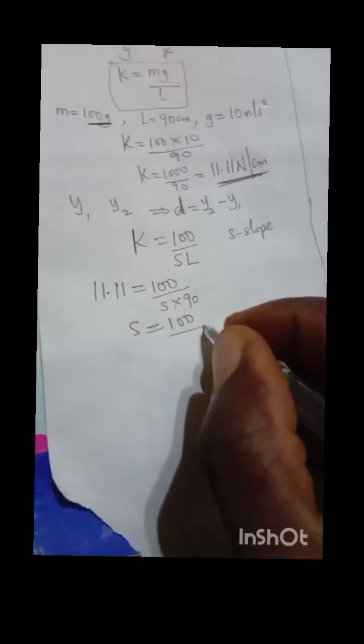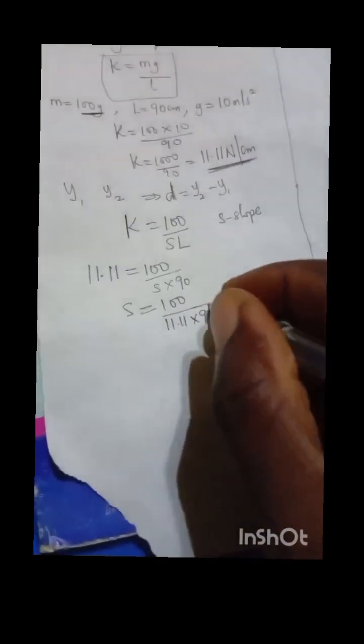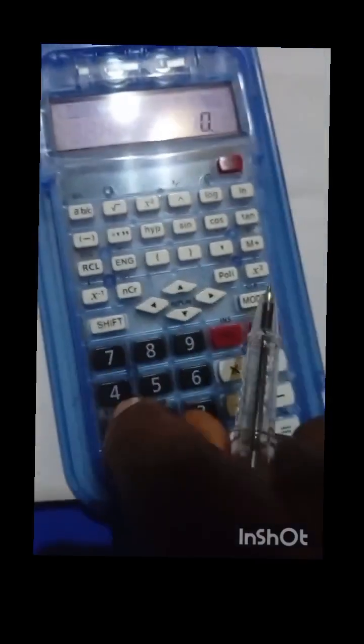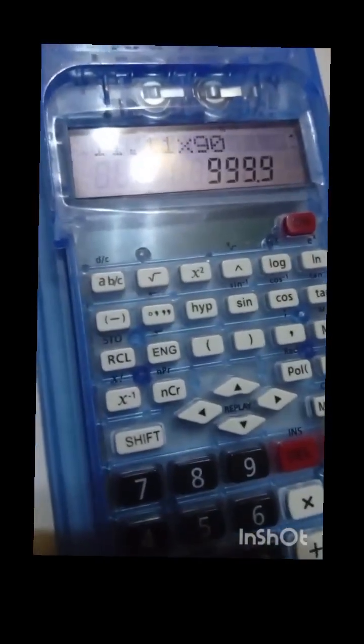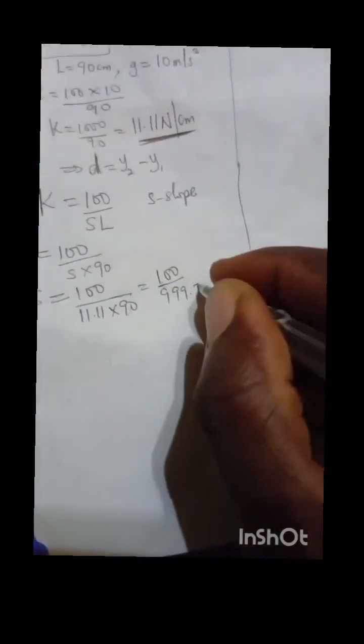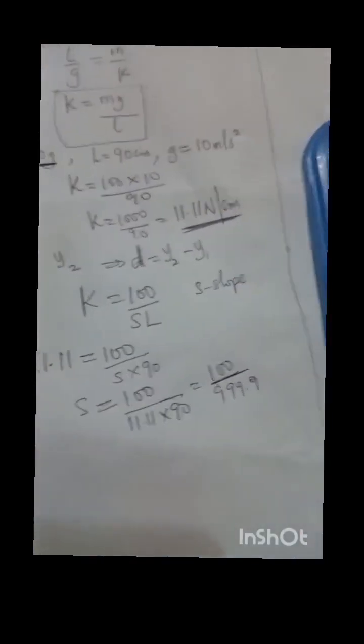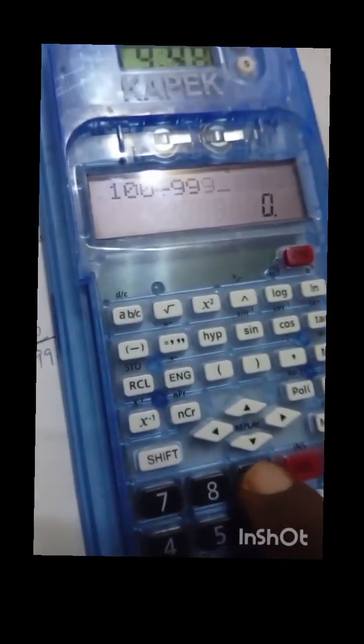In that situation, if I cross multiply, I'll be having S = 100 / (11.11 × 90). Sorry for jumping steps because of time. Let me press my calculator: 11.11 × 90, I'm having 999.9. Divided by 100, divided by 999.9.